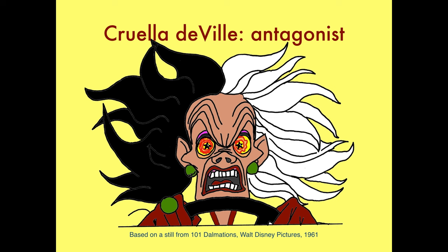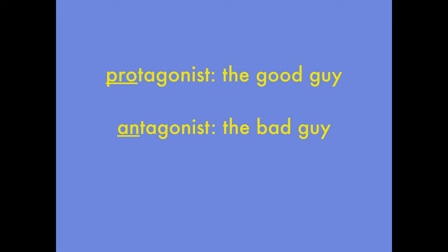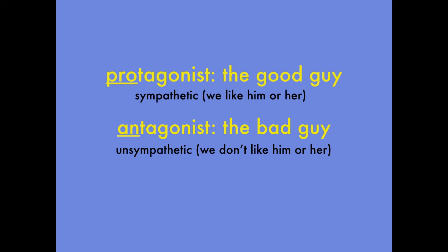Protagonists and antagonists are generally a matching pair, so you would say that Darth Vader is Luke Skywalker's antagonist. Protagonist: good guy. Antagonist: bad guy. When you like a character or want him to be successful, we say that character is sympathetic. So a protagonist is generally sympathetic. Characters we don't like — like an antagonist — we say are unsympathetic.